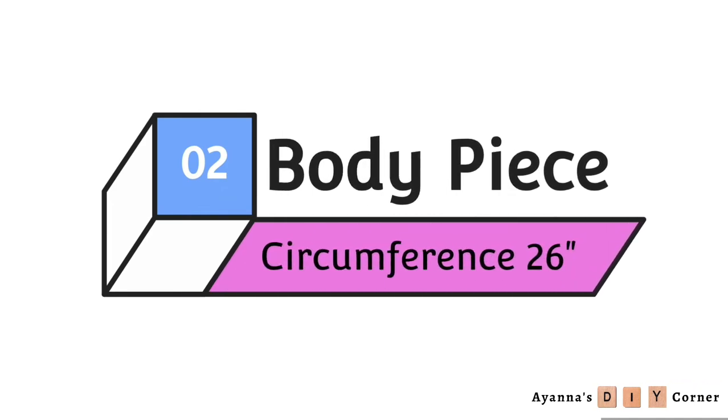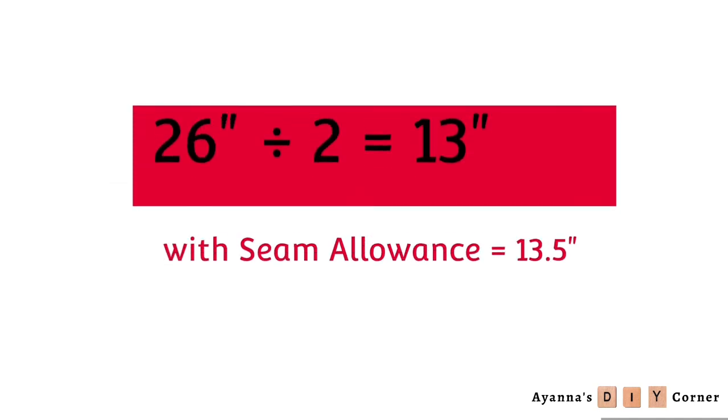Next, calculate for the body piece. Divide your circumference by 2. I got 13, and for seam allowance I made it 13.5.